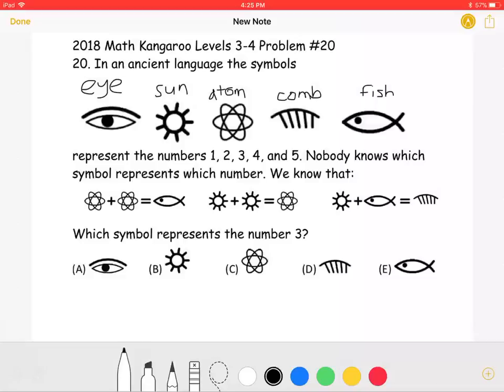In an ancient language, the symbols Eye, Sun, Atom, Comb, and Fish represent the numbers 1, 2, 3, 4, and 5.